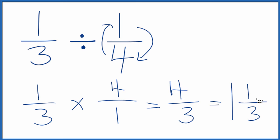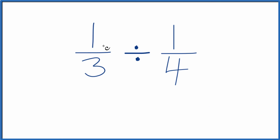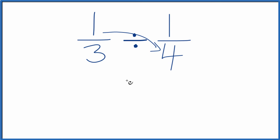There is one other way you can do this. You can multiply one times four, and that gives us four, and three times one, that gives us three, and we end up getting the same answer.